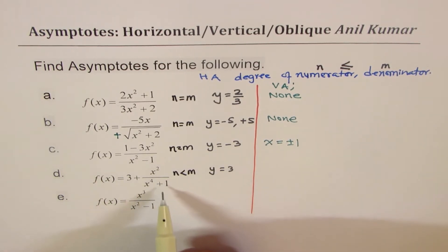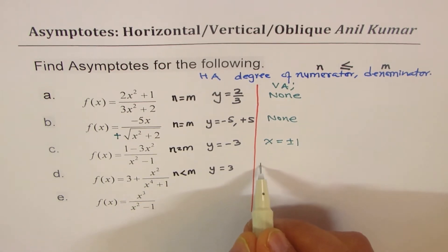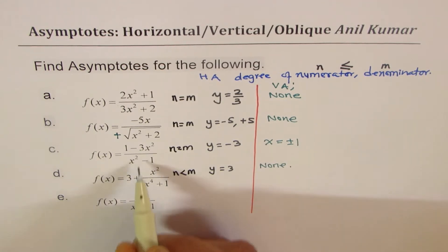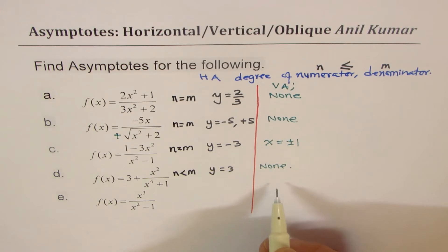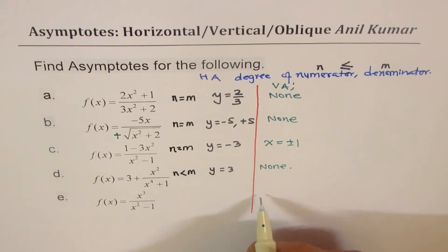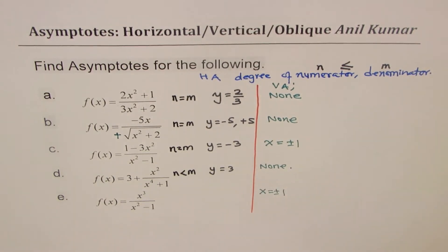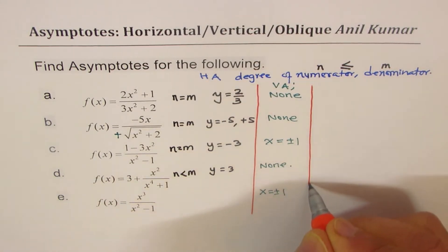For the next function, the denominator is x to the power of 4, which can never be negative, so there is no vertical asymptote. The last case is similar to the earlier one and will have a vertical asymptote at x equals plus or minus 1. So we have completed vertical and horizontal asymptotes.